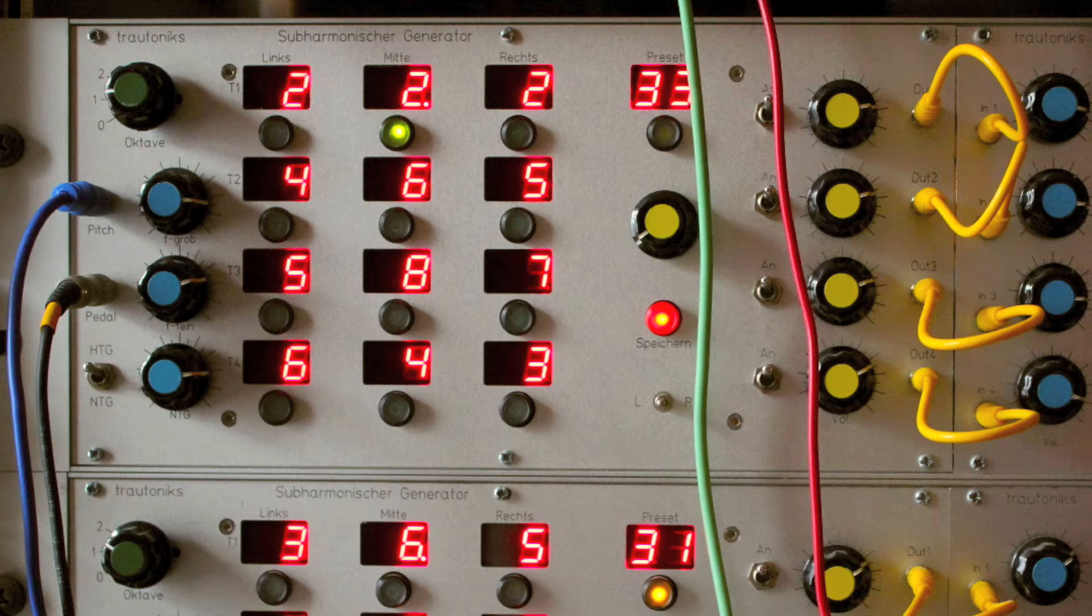Looking at the front panel of the sub-harmonic generator, from left to right, we have a CV input that controls the frequency of the master oscillator, below that a passive input that connects to a foot pedal.